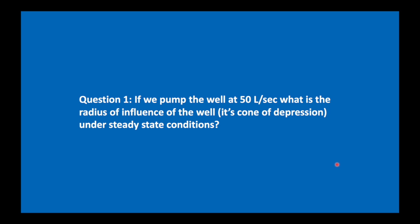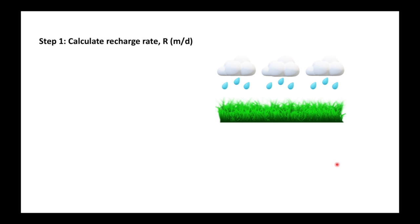Our first question: if we pump the well at 50 liters per second, what is the radius of influence of the well? That means the maximum extent of the cone of depression under steady state conditions.